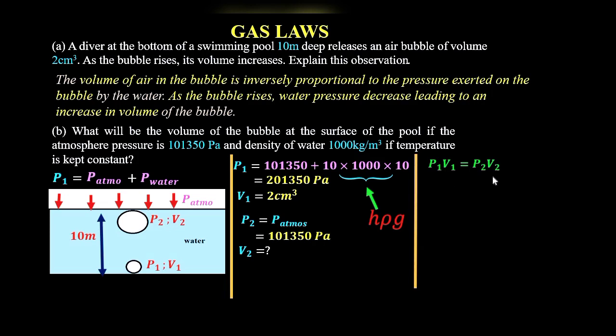And then after that, our task is to substitute the values of P₁, V₁, and P₂ in this formula. So we say V₂ is equal to P₁ times V₁. P₁ is 201,350 times V₁, which is 2. And then on the denominator, we have P₂, which is 101,350.